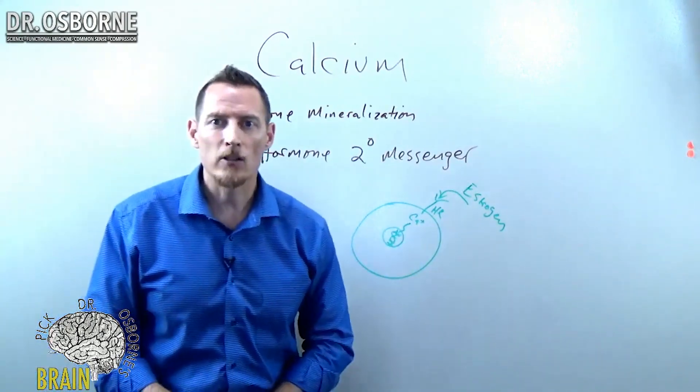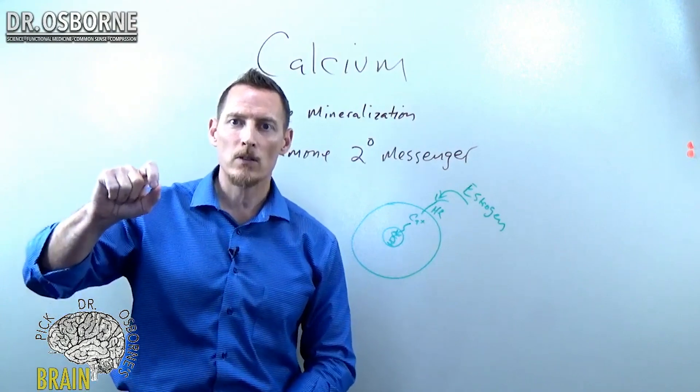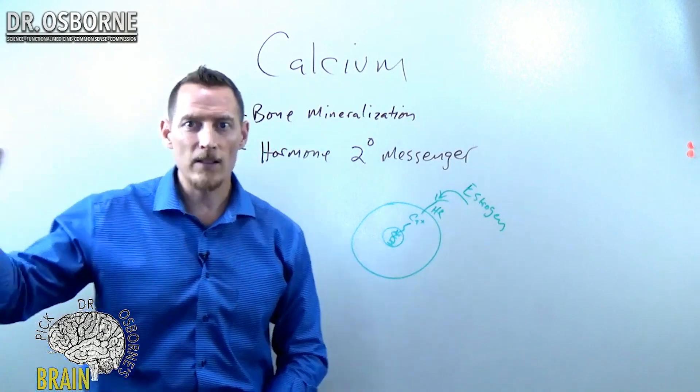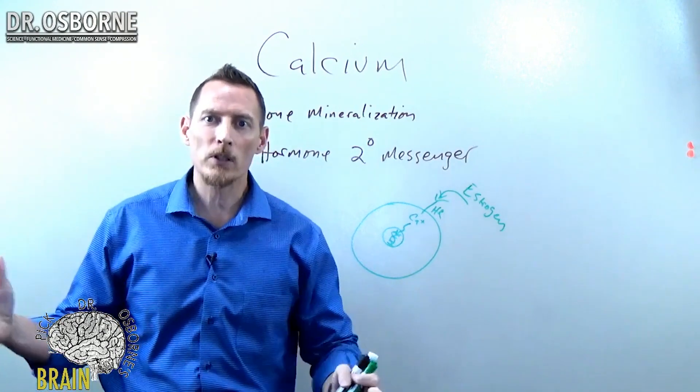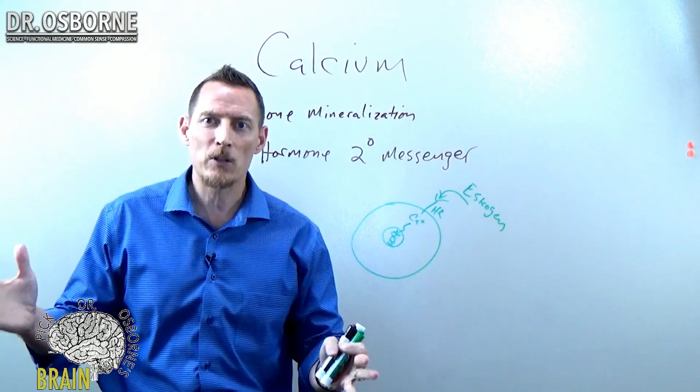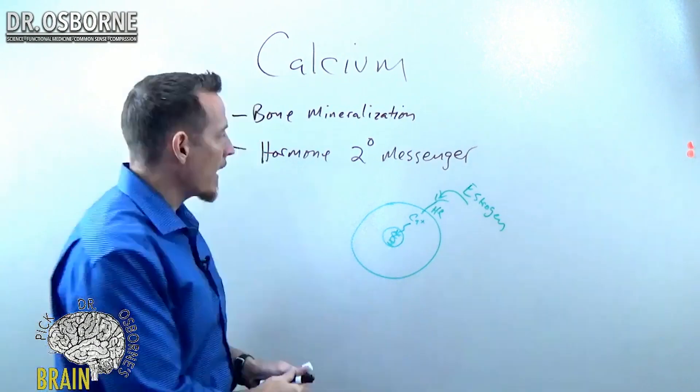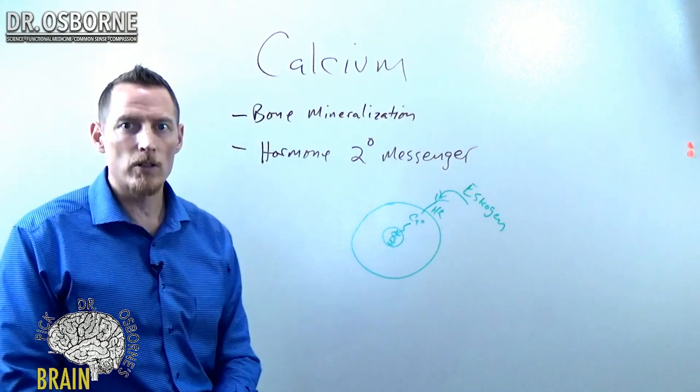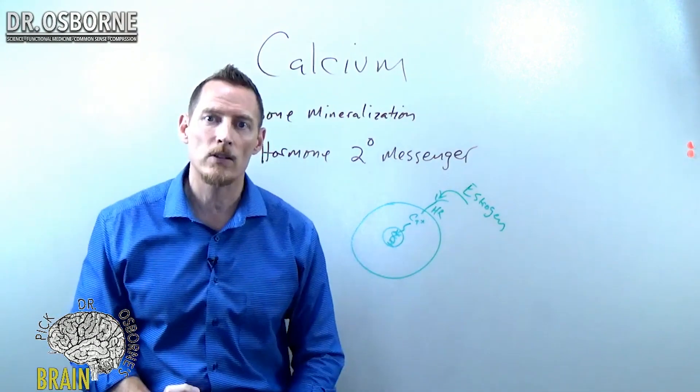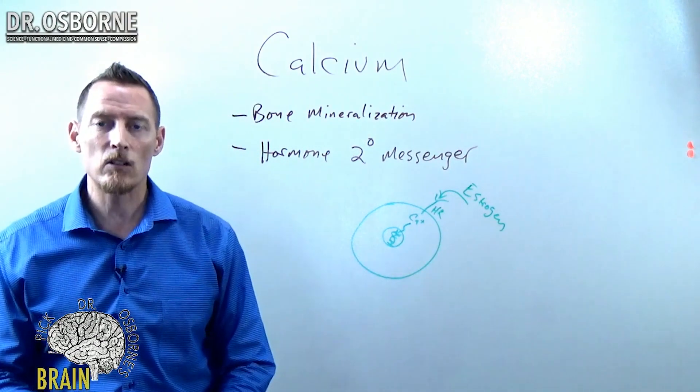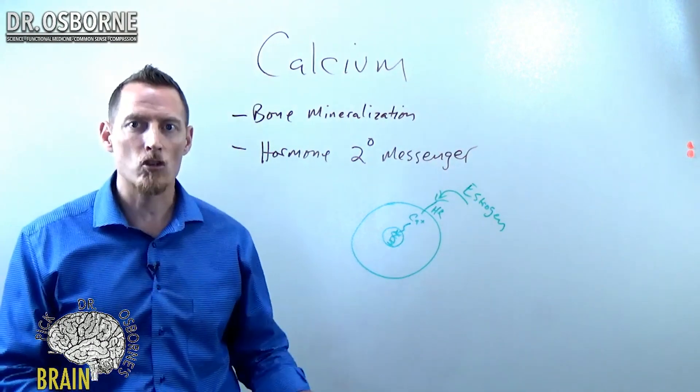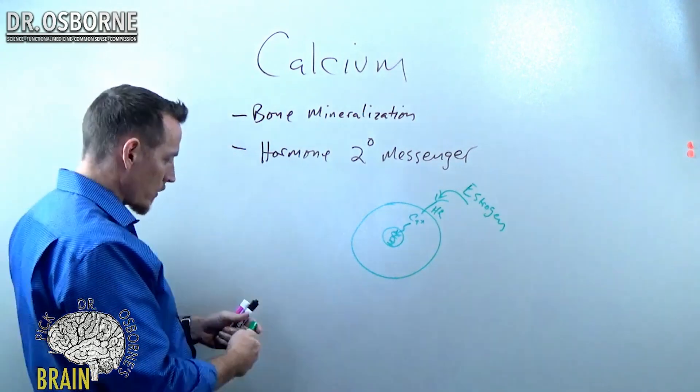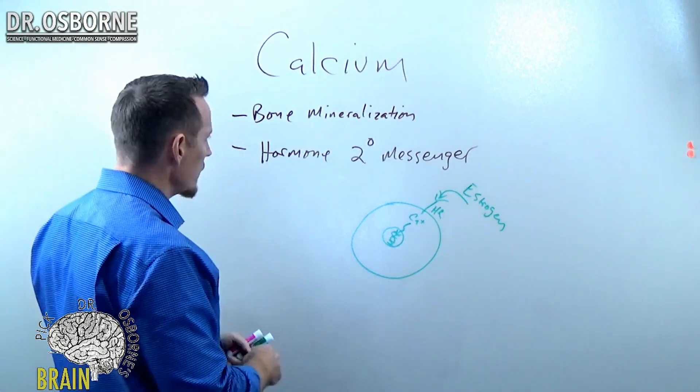If you ever played that game in grade school where you whispered something into somebody's ear and then they whispered it to the next person and the next person, and then at the end of the line, the message was completely skewed. It typically was not the original message. That would be like having no calcium or very little calcium to deliver the proper message. And so the right message doesn't make it to the DNA, which doesn't lead to the upregulation of what that hormone is trying to upregulate. So that's a major problem with calcium deficiency. So it works as a hormone secondary messenger.